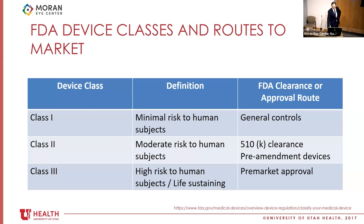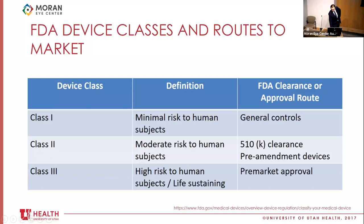One specific exception for Class 2 devices is the pre-amendment exception, which allows any device marketed before 1976 — when the FDA passed the Medical Device Amendments Act — to essentially be given grandfather status. It never had to undergo additional clinical testing to remain on the market. So if you were selling an orbital implant in 1975, you were allowed to continue marketing that device without any additional approval after the passage of this act.